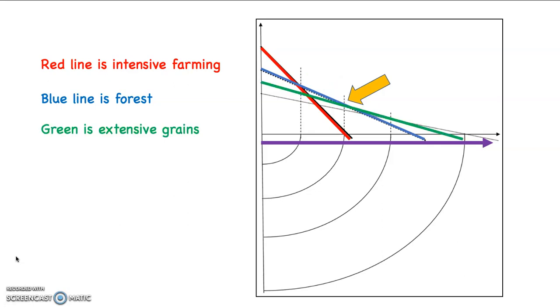Then we add in a green line, which is extensive grains, and notice where they cross. From that point where the blue and the green line cross, at that point, extensive grains are going to dominate. And then we add one more line, which is orange on this graph that's extensive grazing. Notice where the green and the orange cross. From that point on, what's going to happen is extensive grazing of animals is going to dominate the agricultural landscape.